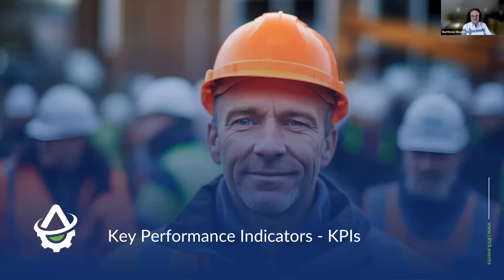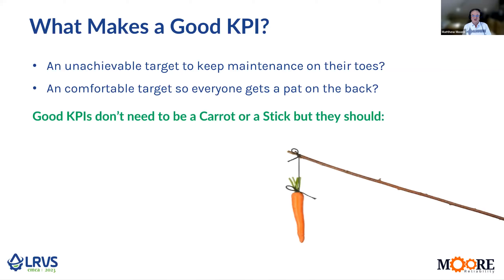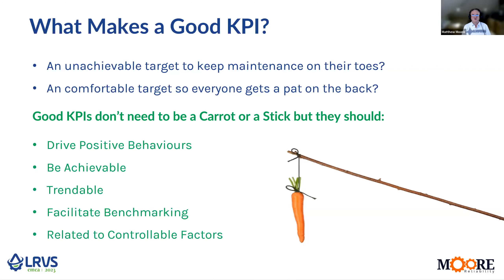So how about looking at a few key performance indicators? What makes a good KPI in the first place? If we set our KPIs too high with an unachievable target — if it's just planned to beat maintenance with a stick and keep them on their toes — they're not going to be very engaged; they're going to think they're fighting a losing battle. But if you do the opposite and make the target too comfortable, it's not going to push the program forward — they'll just fall back into their comfort zone. In my view, KPIs don't need to be a carrot or a stick, but what they should definitely do is drive positive behaviors.